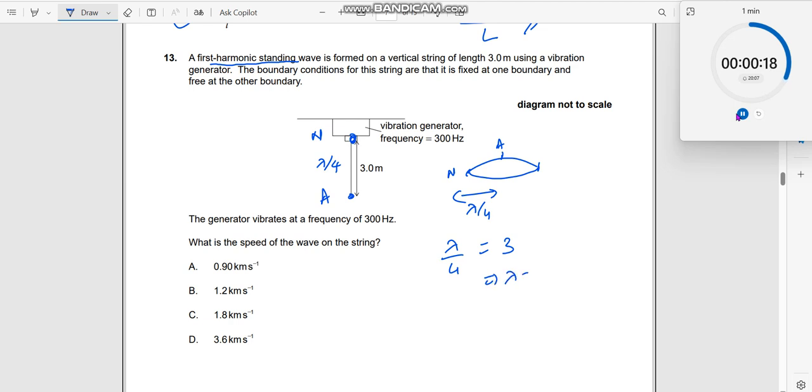The generator vibrates at a frequency of 300 hertz. Frequency is given, wavelength is given, so v is equal to f lambda, which should be 300 multiplied by 12, which should be 3600 meters per second, which is identically this value.